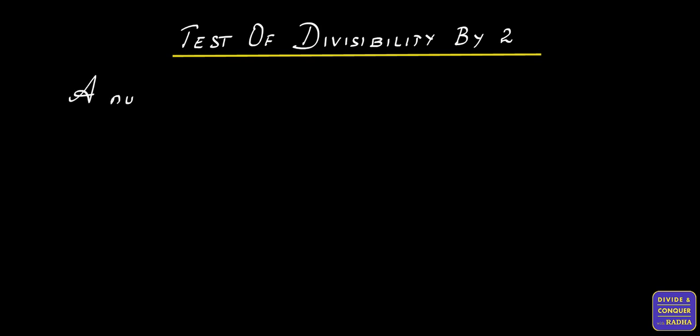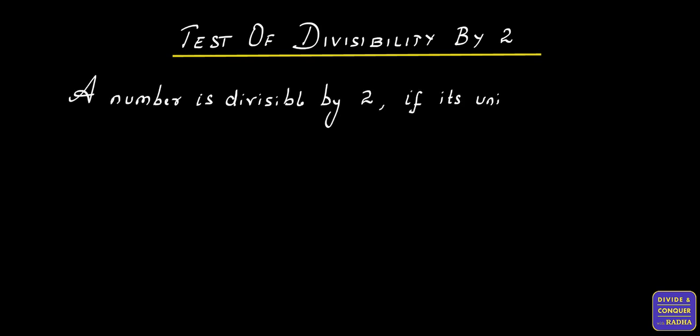Test of Divisibility by 2. The rule states that a number is divisible by 2 if its unit's digit is either 0, 2, 4, 6 or 8.